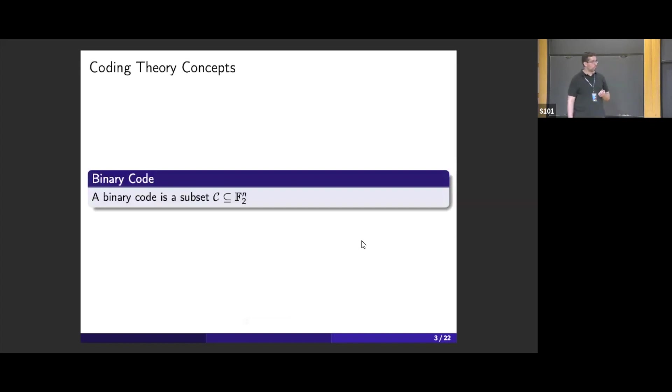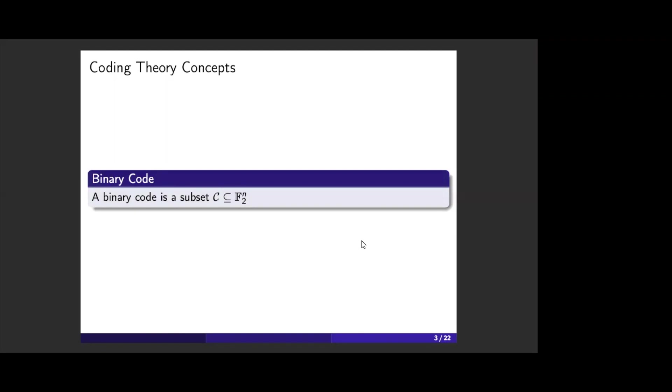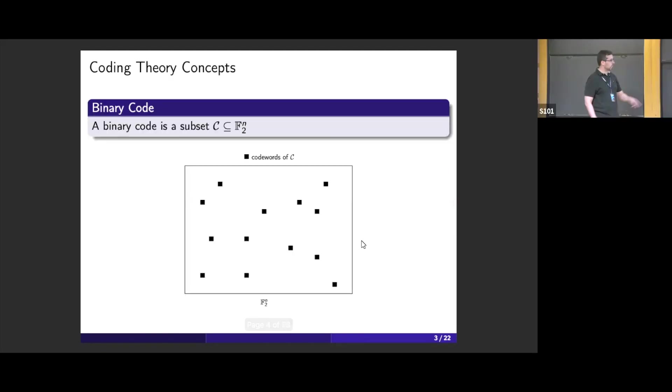A binary code is one of the simplest objects that you can imagine. Here we have the vector space F2 to the n, and the binary code is just any subset. So it's a subset of binary streams. The elements of this code are called code words, represented as black boxes here in the picture. It's just a collection of binary streams of length n.